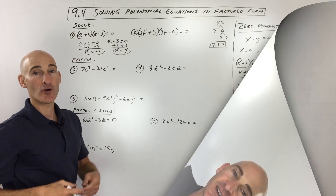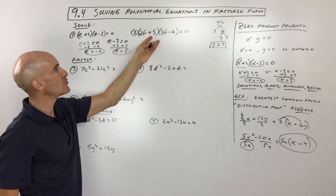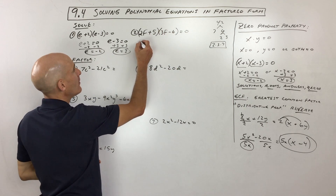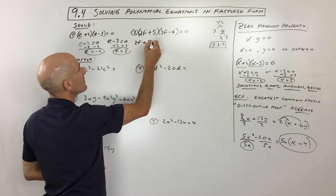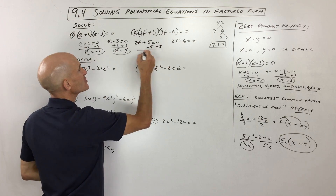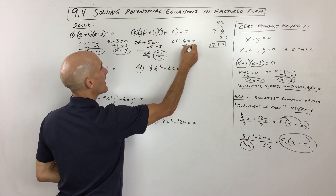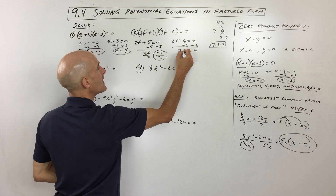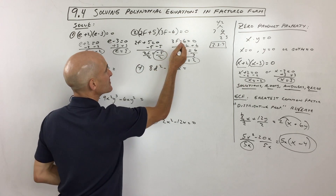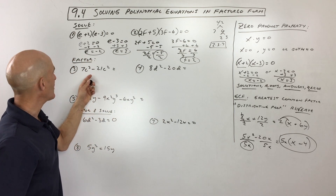We could say those are our roots, our zeros, or our solutions. Now try number 2: (2f+5)(3f-6) equals zero. What does f equal? Set each factor equal to zero. For 2f plus 5 equals zero, divide both sides by 2 — that's one answer: f equals negative 5/2. For 3f minus 6 equals zero, add 6 to both sides, then divide both sides by 3. Remember with equations, you're always doing the opposite operation, working from the outside in.